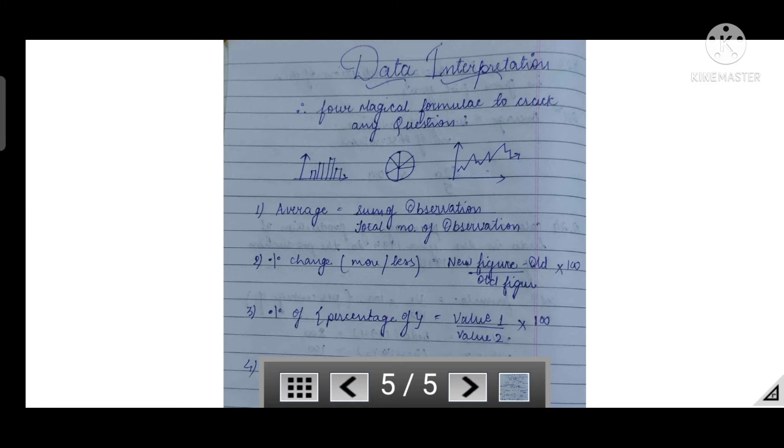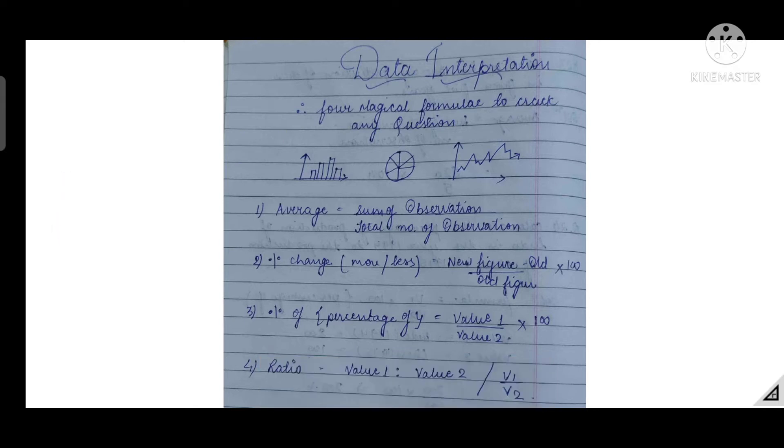So basically, given information. The first one is average, second is percentage changes, third is percentage of, and the fourth is ratio. I call it the four magical formulas because this is the base of DI.